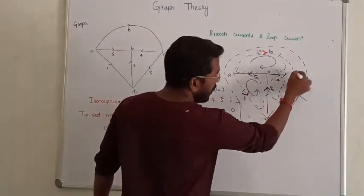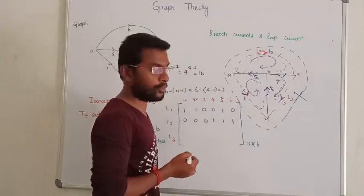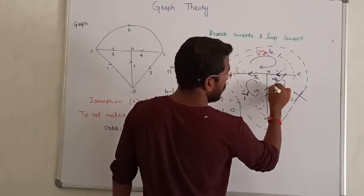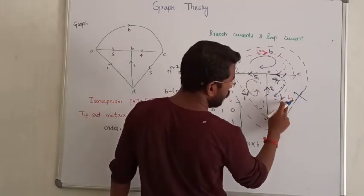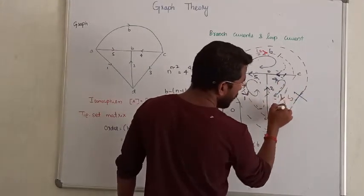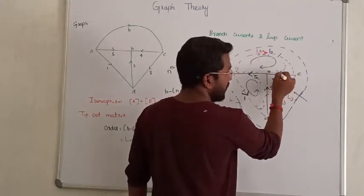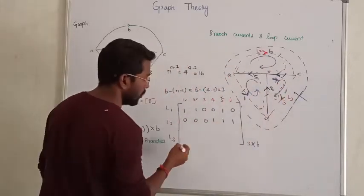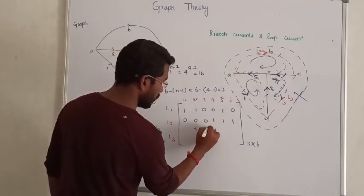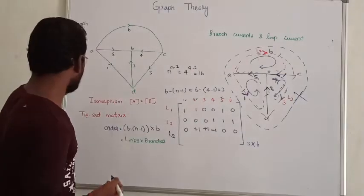For loop 3, the link travels in one direction. Branch 4 is in the opposite direction — counterclockwise — so it gets minus 1. Branches 2 and 3 are in the same direction as the loop, so they get plus 1. Rest of the values are 0. That is how we form the tie set matrix.